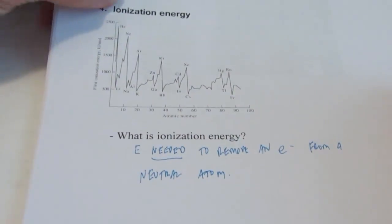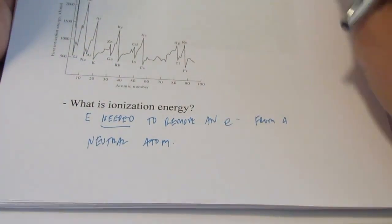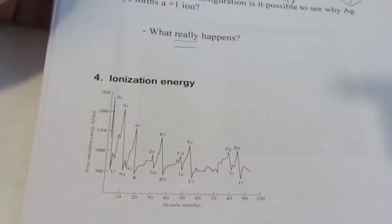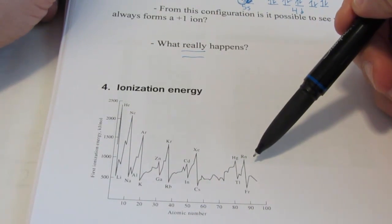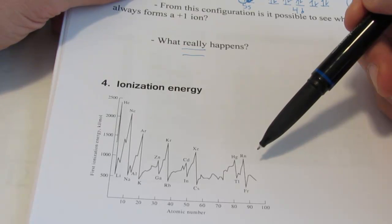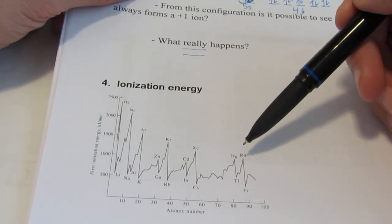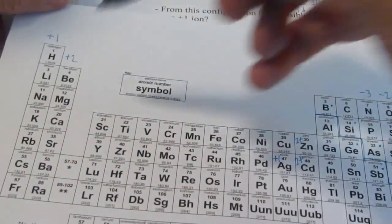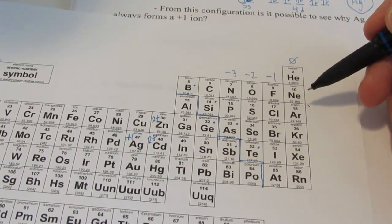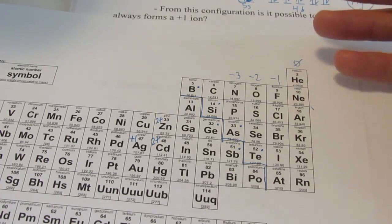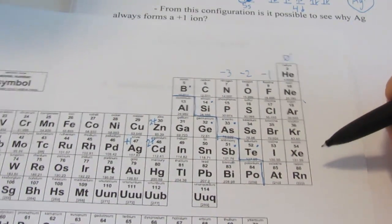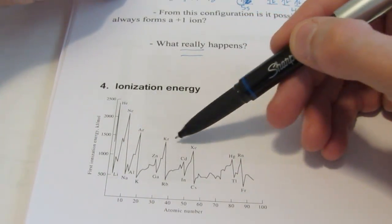We're also going to run into second ionization energies — the energy needed to remove an electron from a positive 1 ion. Now let's take a look at this graph. You notice when I look at the noble gas family, they have super high ionization energies — that should be for obvious reasons. They have a nice stable octet, they're not going to be reactive, and they're also the smallest members in their period. When you go across a period, the atomic radius gets smaller, so ionization energy increases. That's why the noble gases are always at the peak in my graph.